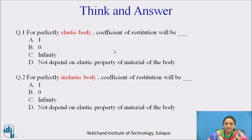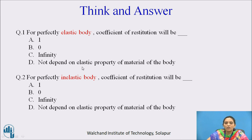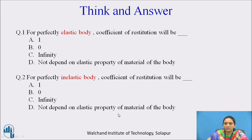Now, pause the video here and answer the questions. Question 1: for a perfectly elastic body, the coefficient of restitution will be — options: (A) 1, (B) 0, (C) infinity, (D) not dependent on the elastic property of the material. Question 2: for a perfectly inelastic body, the coefficient of restitution will be — same options: 1, 0, infinity, or not dependent on elastic property.